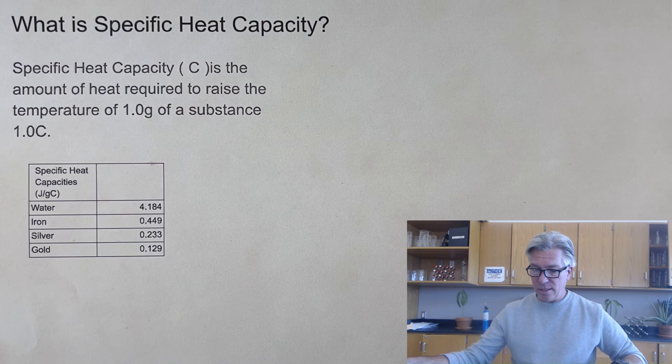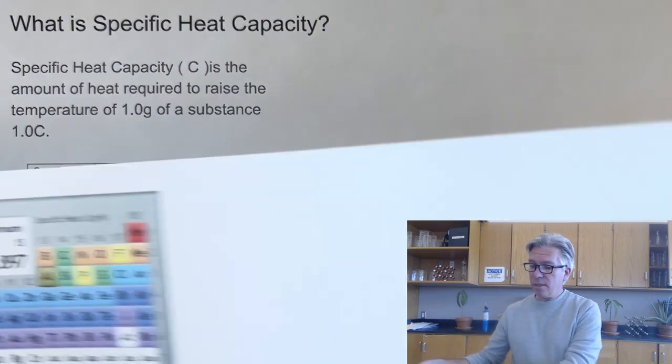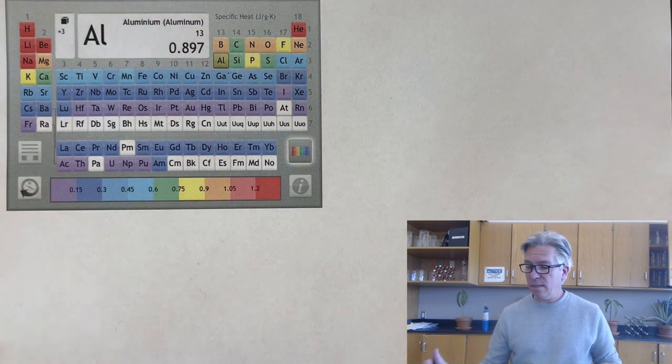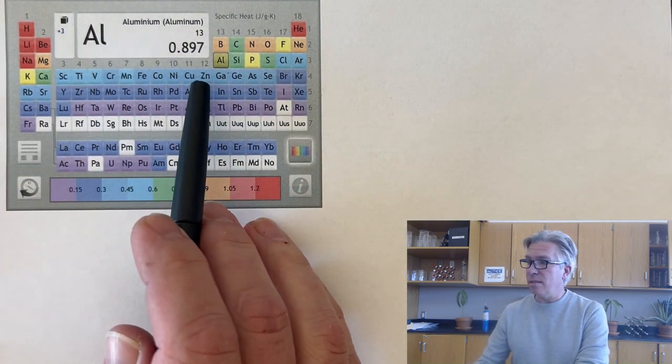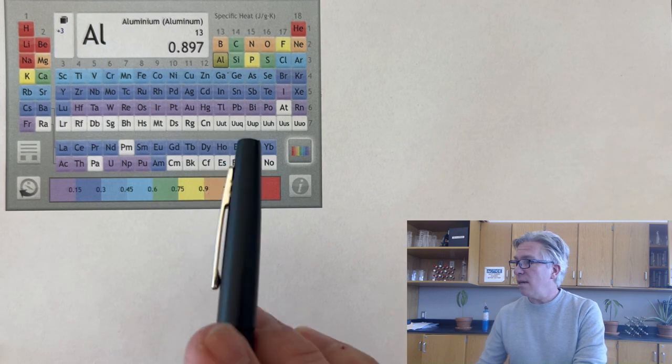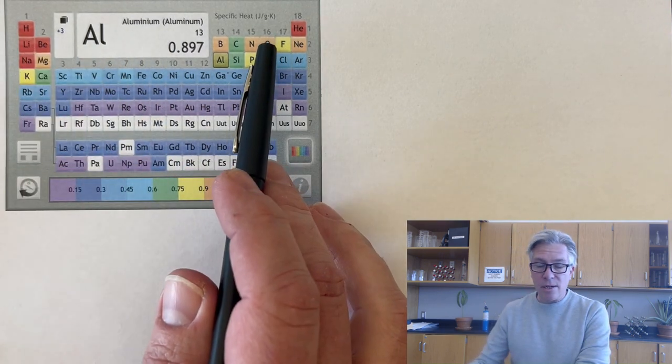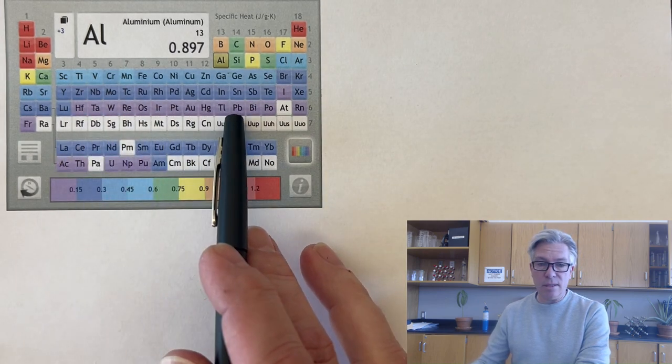In our first video, we learned that specific heat capacity is the amount of heat required to raise the temperature of one gram of a substance one degree Celsius. We also learned about the Dulong-Petit law: generally the lighter the element, the higher its heat capacity, and the heavier the element, the lower its heat capacity.